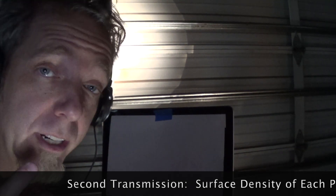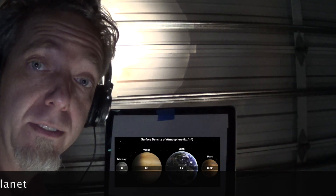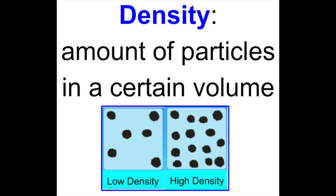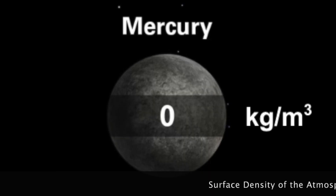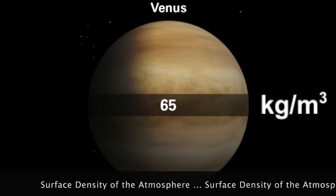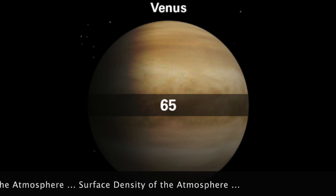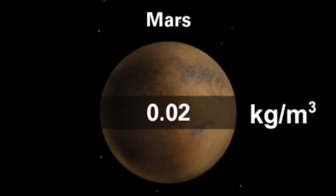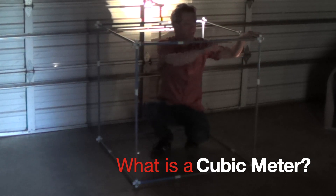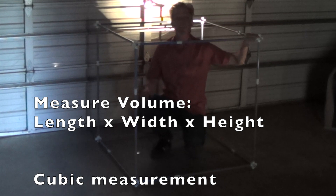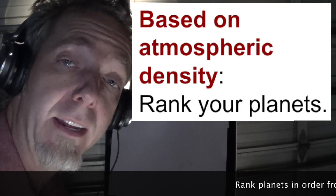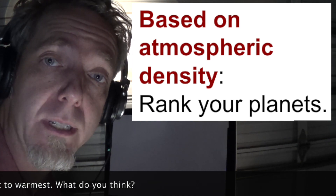We're receiving our second transmission now. This next transmission has information about the surface density of the atmosphere measured in kilograms per cubic meter. Density is the amount of particles in a certain volume. The surface density of Mercury's atmosphere is 0 kilograms per cubic meter. The surface density of Venus's atmosphere is 65 kilograms per cubic meter. The surface density of Earth's atmosphere is 1.2 kilograms per cubic meter. The surface density of Mars's atmosphere is 0.02 kilograms per cubic meter. A cubic meter is a space that is a meter across, a meter down, and a meter deep. Based on that data, try ranking the planets in order from coolest to warmest. Has your answer changed?